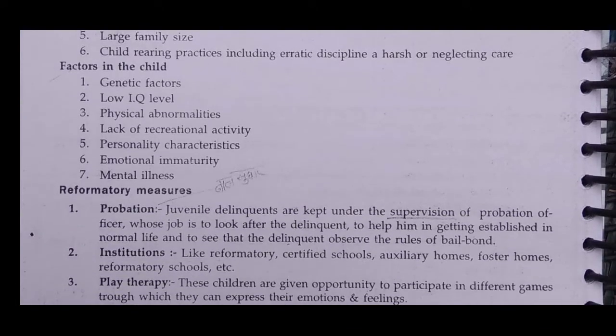Then there are factors in the child itself: genetic factors, genetic transmission, low IQ level, and education level. If children lack education, they will not know about positive and negative behavior. Physical abnormalities — if the child has a physical abnormality — and lack of recreational activities also play a role. Personality characteristics matter too; if the child is not well-adjusted, the child will not be able to adapt to situations. Emotional immaturity is also present in some children.